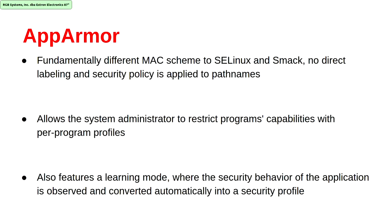AppArmor is fundamentally different from SELinux and SMAC because it has no direct labeling — security policies are applied to path names. It is shipped with Ubuntu and OpenSUSE, allowing system administrators to restrict a program's capabilities. It also features a learning mode where the security behavior of an application is observed and automatically converted into a security profile.